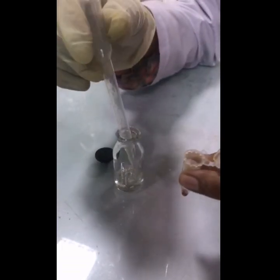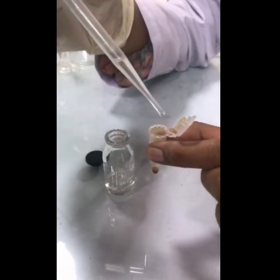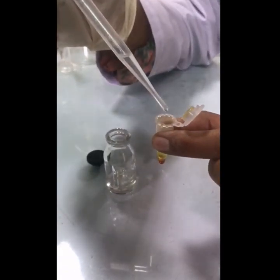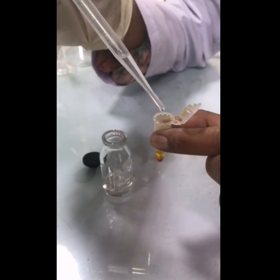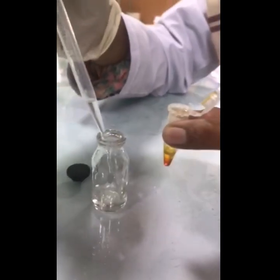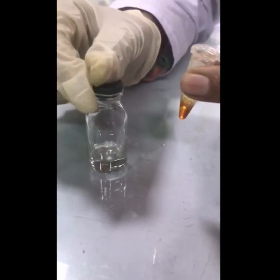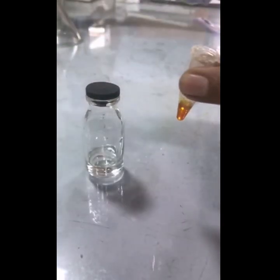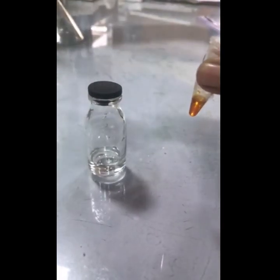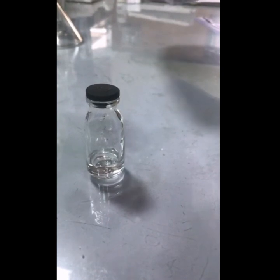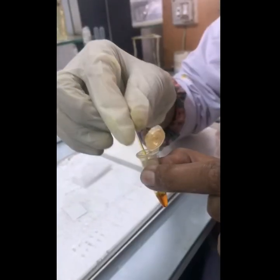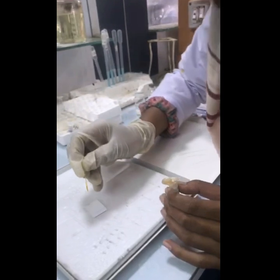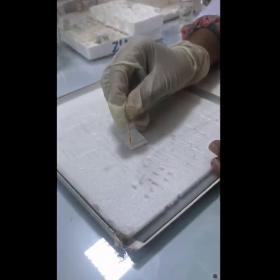Assalamu alaikum, welcome back to my channel. Here is a video on preparative TLC. For preparative TLC, my sample was a small amount, so I simply added solvent in which it is completely soluble and made a concentrated solution. I used ethyl acetate, as my sample was soluble in ethyl acetate, and made its solution.